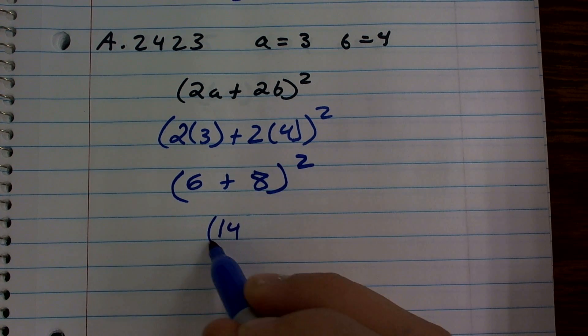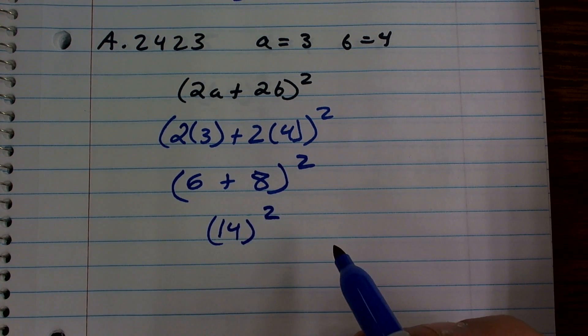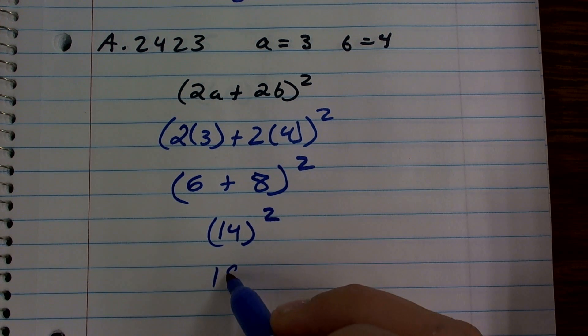6 plus 8 is now 14 squared. Now I just need to know 14 times 14 is 196.